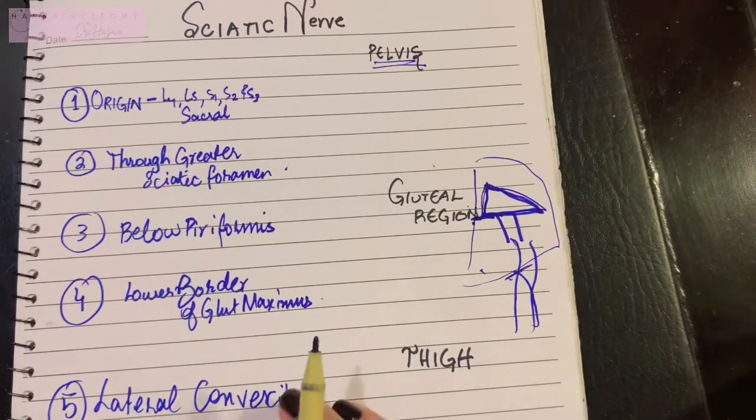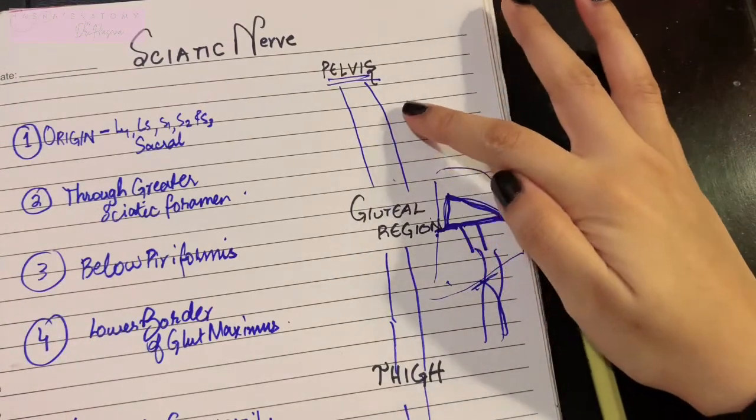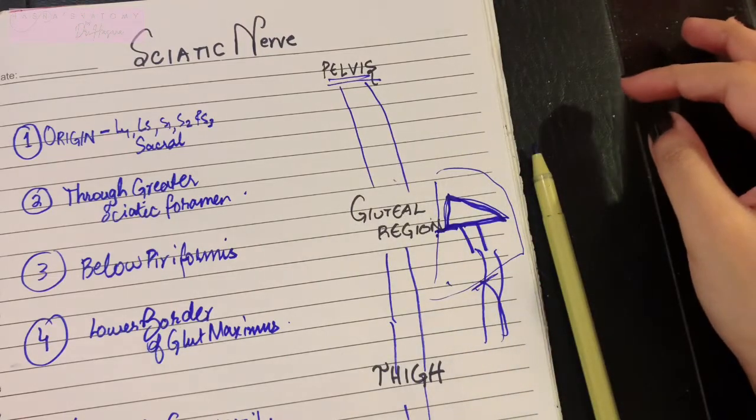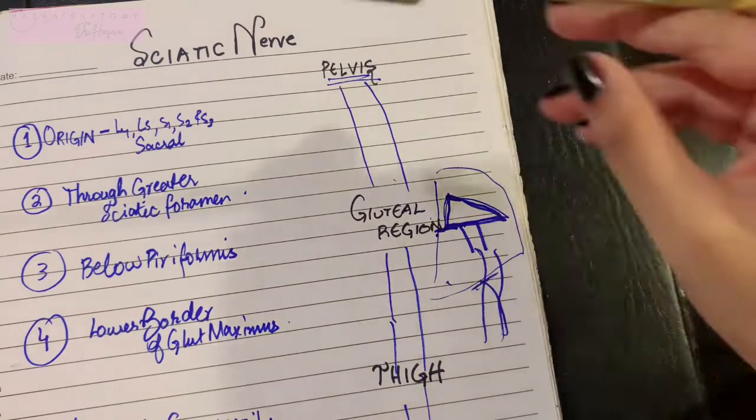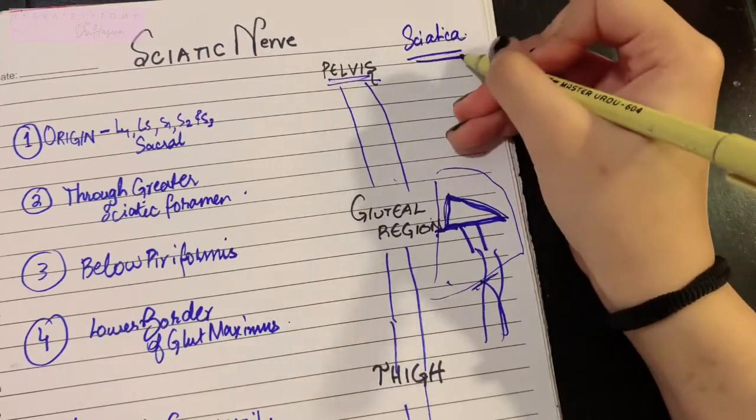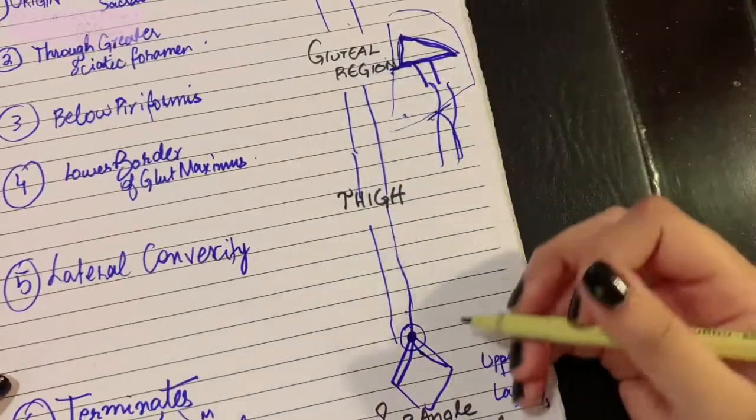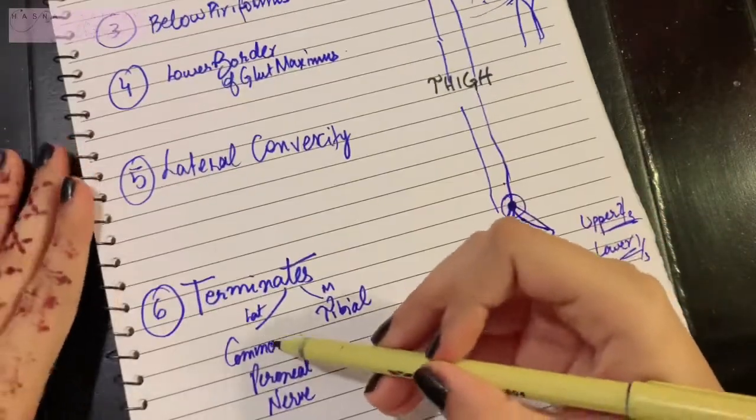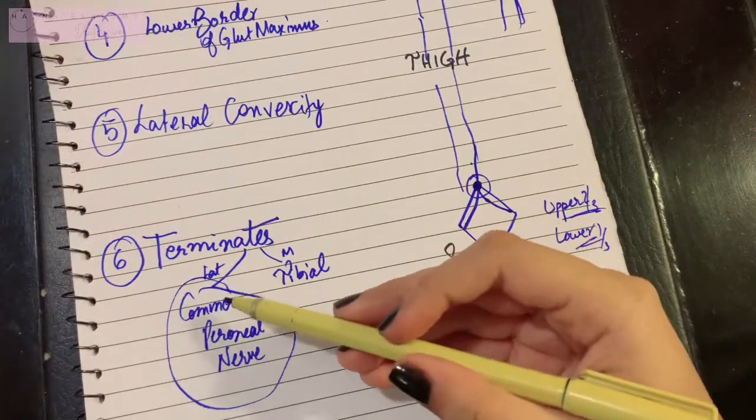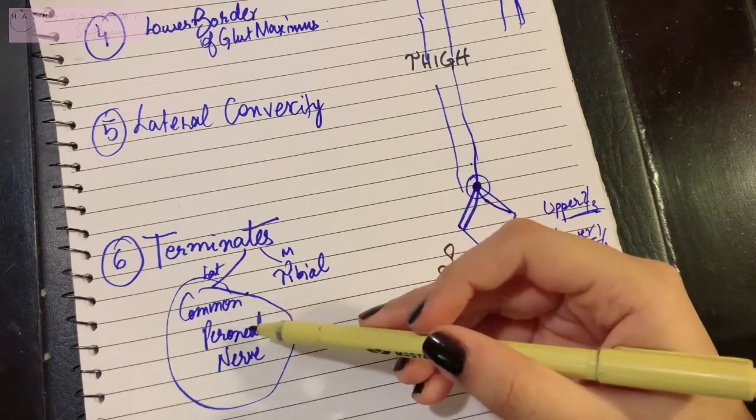Let's discuss a couple of clinicals related to the sciatic nerve. Number one: shooting pain through the distribution of sciatic nerve is known as sciatica. What happens in sciatica is that there is pain in the distribution of your sciatic nerve, and more particularly in the common peroneal part of the sciatic nerve.